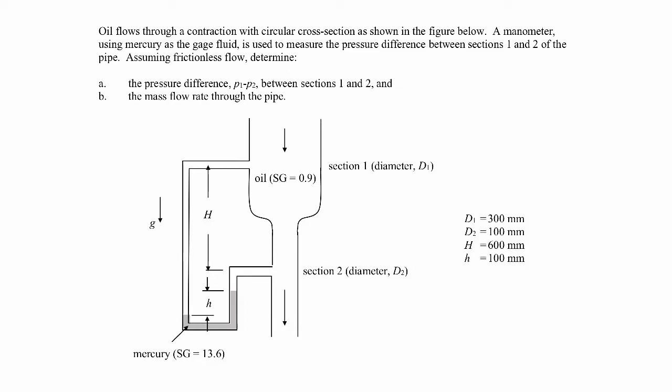In this example we're told that we have oil flowing through a contraction with a circular cross-section, so it's headed downward in the same direction as gravity. We also have a U-tube manometer connected to that pipe section, with mercury as the working fluid.